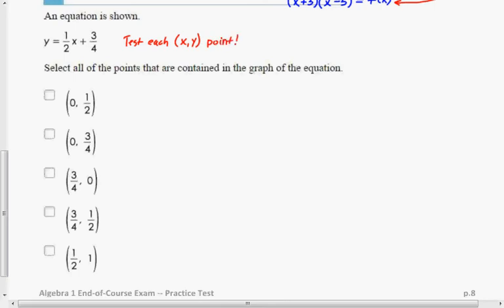So grab a calculator and let's check this out. 1 half times 0 plus 3 fourths.